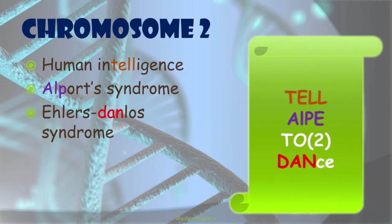The mnemonic is: 'Tell ape to dance.' When remembering any monkey, picture a monkey dancing. So 'tell' is for human intelligence, 'ape' is for Alport syndrome, '2' is for chromosome 2, and 'dance' is for Ehlers-Danlos syndrome.